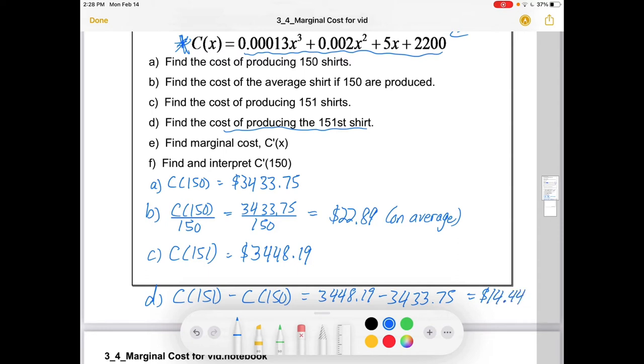So it costs less than the average cost has been to that point. It's definitely bringing the average cost down with the more you make at 151.